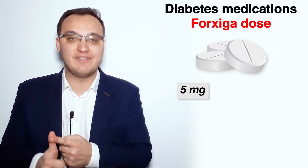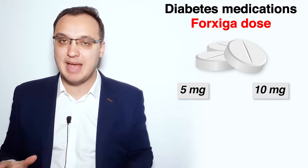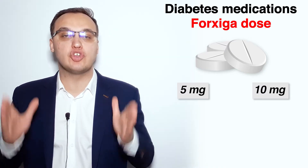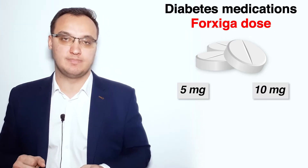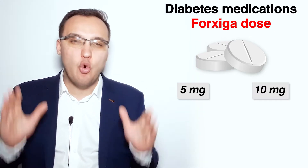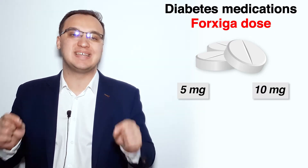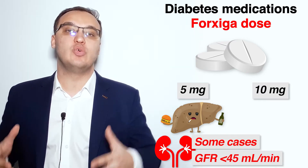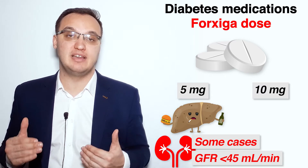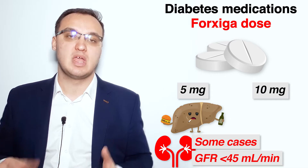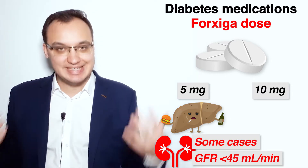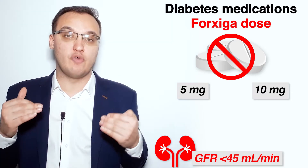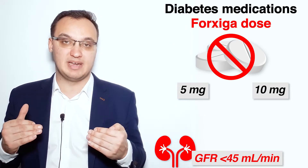Forxiga can be given as 5 and 10 milligram tablets any time of the day, with or without food, and we usually start with the 10 milligram dose. The 5 milligram dose is usually only given in severe liver disease or in some cases severe kidney disease with a GFR of less than 45 milliliters per minute. Dapagliflozin is generally not recommended below a GFR of less than 45 milliliters per minute.